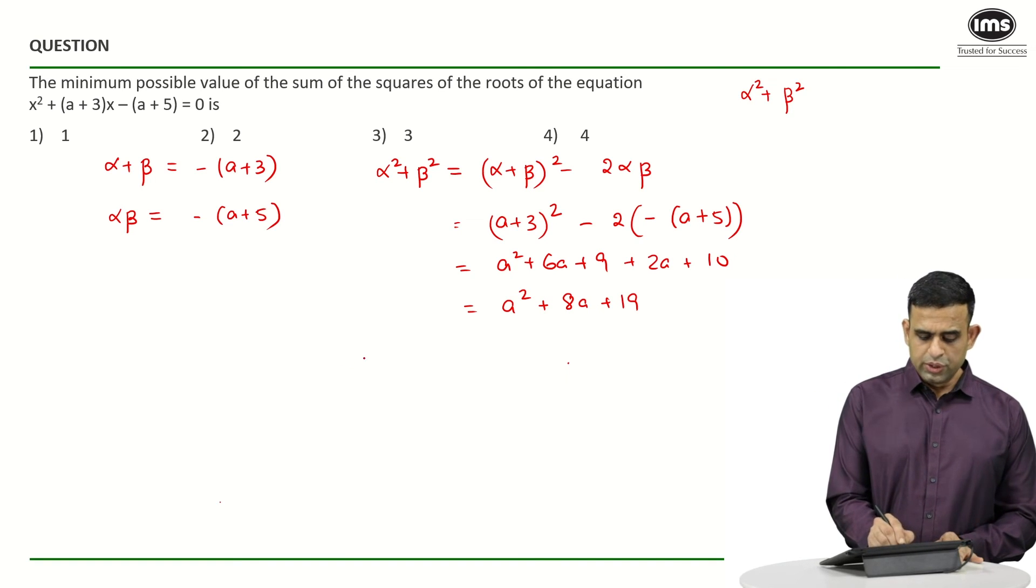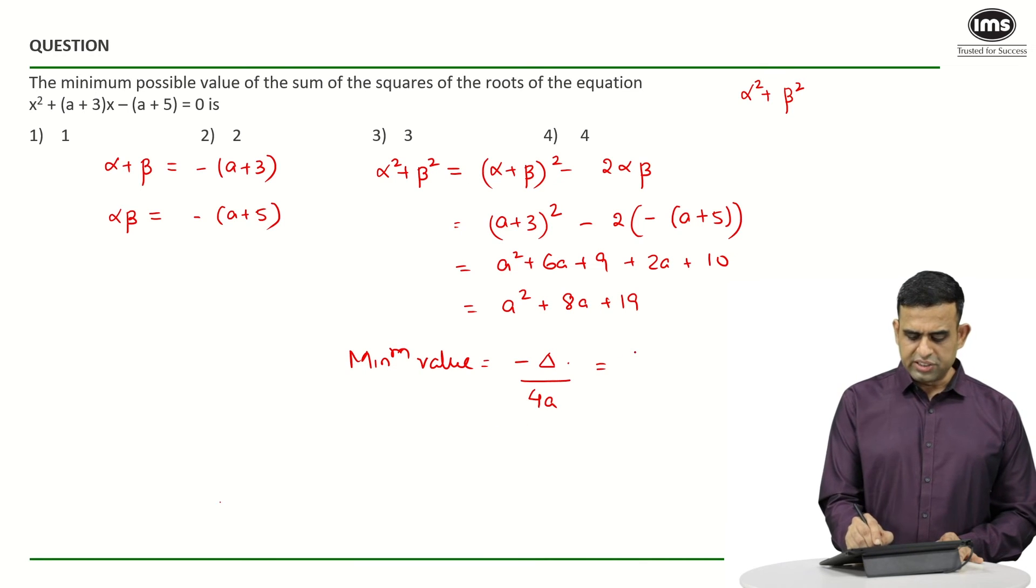The value is nothing but the minimum value. If someone knows -Δ/4a or people can say (4ac - b²)/4a.